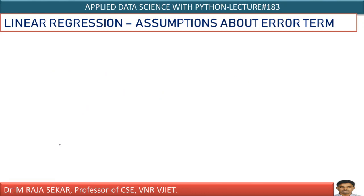When you look at the error term, you have to look at the behavior of the error. What is error? Error is nothing but actual value minus predicted value — that is, A.V. (actual value) minus P.V. (predicted value). So, what is the assumption of the error term?